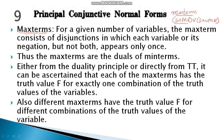For a given number of variables, the max term consists of disjunctions in which each variable or its negation appears, but not both. That is, for a variable P, the presence of a disjunction of P and not P will not be allowed. It will have the combination of all the variables — if there are three variables, all three will appear joined together by a disjunction.